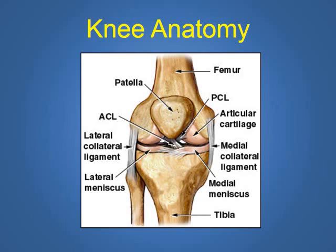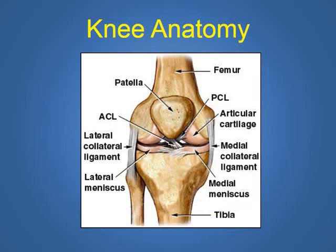The knee joint includes the thigh bone, called the femur, marked here by the red arrow; the shin bone, known as the tibia, marked here by the blue arrow; a small bone along the outside of the shin called the fibula, marked here by the green arrow; and the kneecap, called the patella, marked here by the orange arrow.